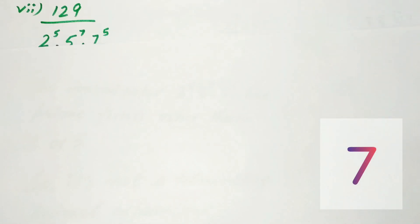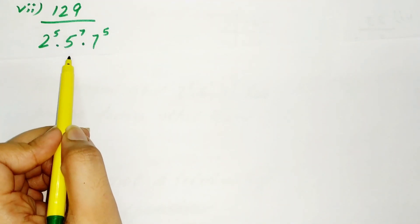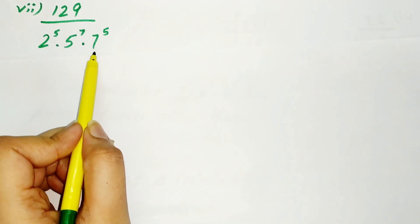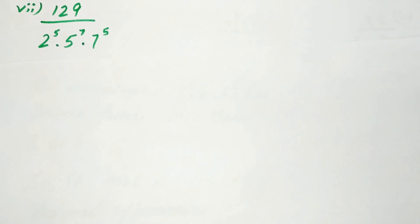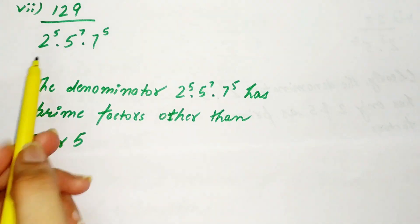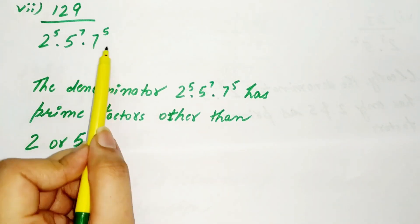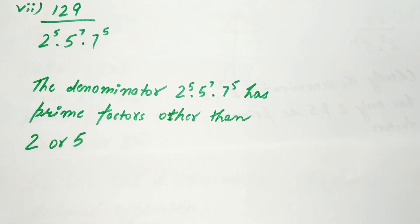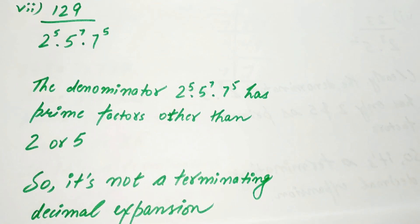The seventh part is 129 divided by 2 raised to the power 5, multiplied by 5 raised to the power 7, multiplied by 7 raised to the power 5. The denominator has prime factors other than 2 and 5 — that is, 7 — so it's not a terminating decimal expansion.